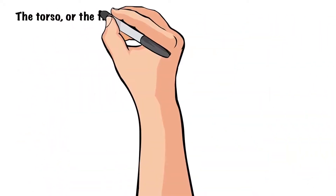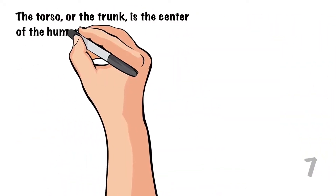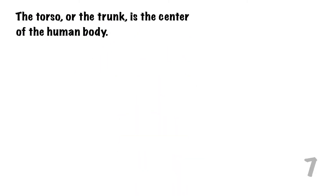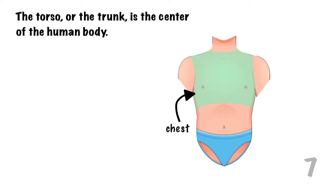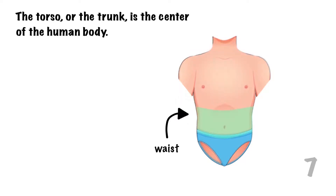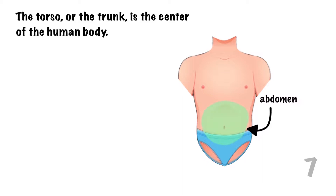The torso, or the trunk, is the center of the human body. There are also different parts in the human torso, such as the shoulders, the chest, the waist, the abdomen, and the hips.